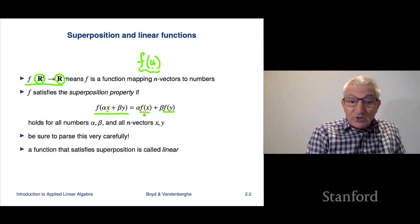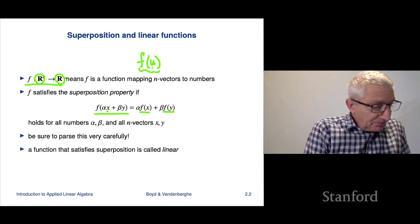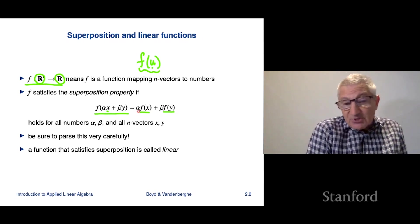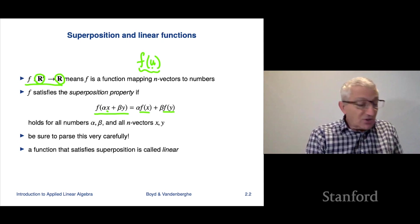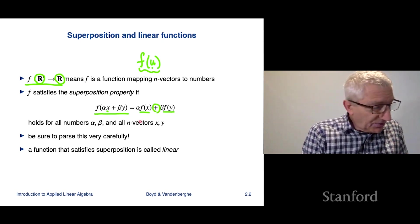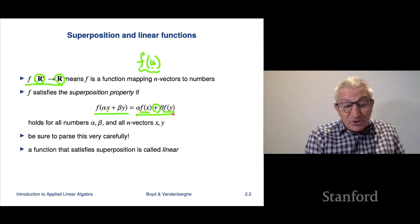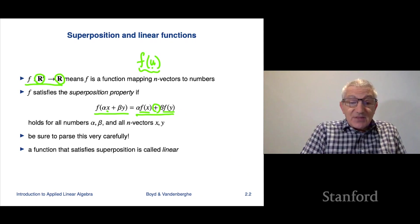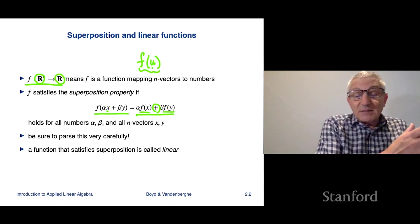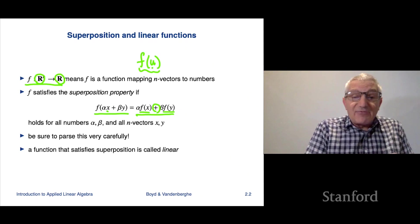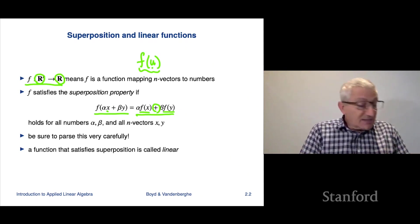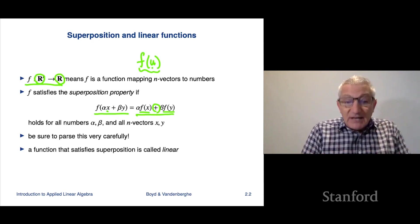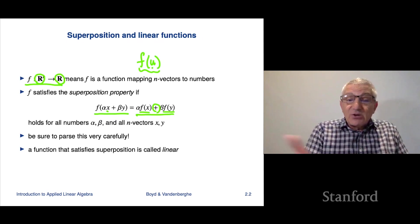Let's look at the right-hand side. We're actually going to do this in the reverse order. We're going to first apply the function to x, and we're also going to apply the function to y. Now, those two things are numbers, right? Because f takes as argument a vector and then it returns a number. So f of x is a number. So is f of y.